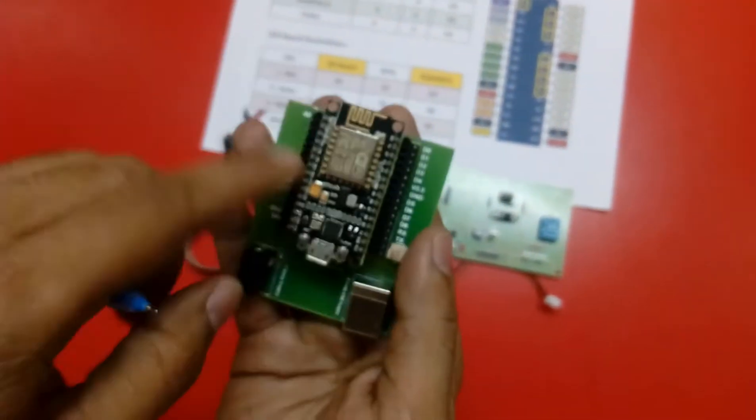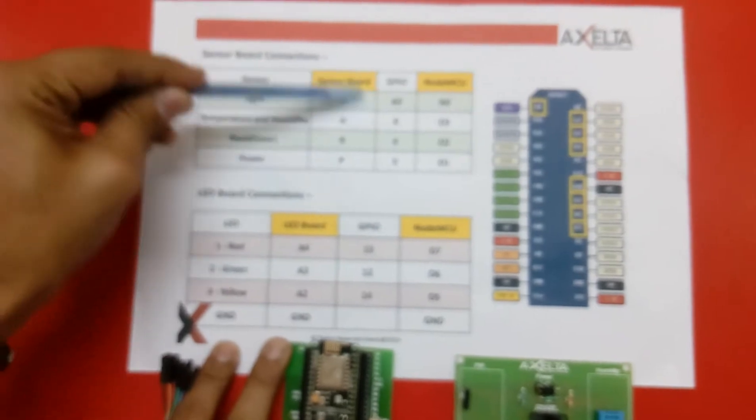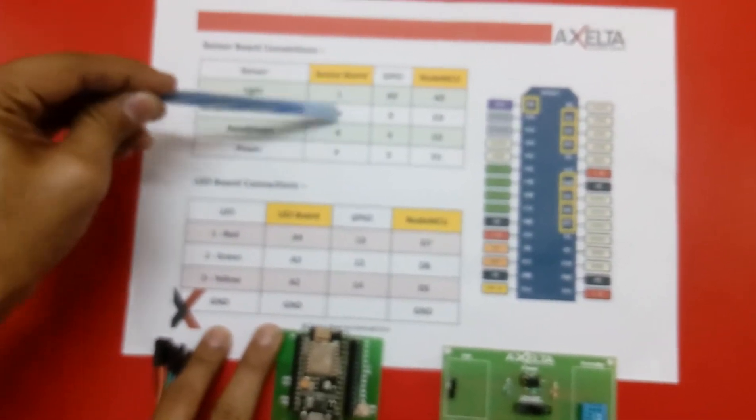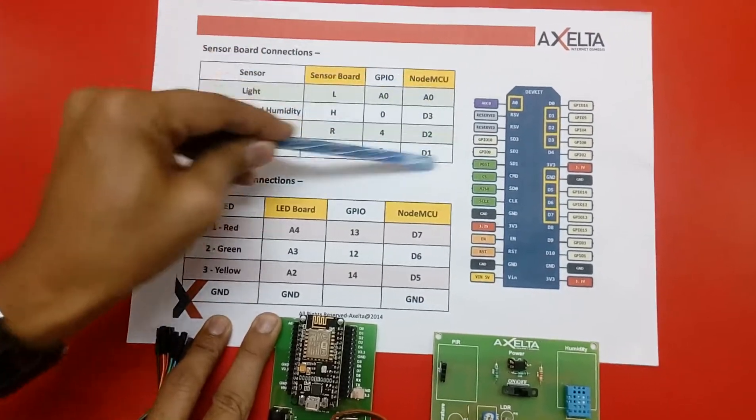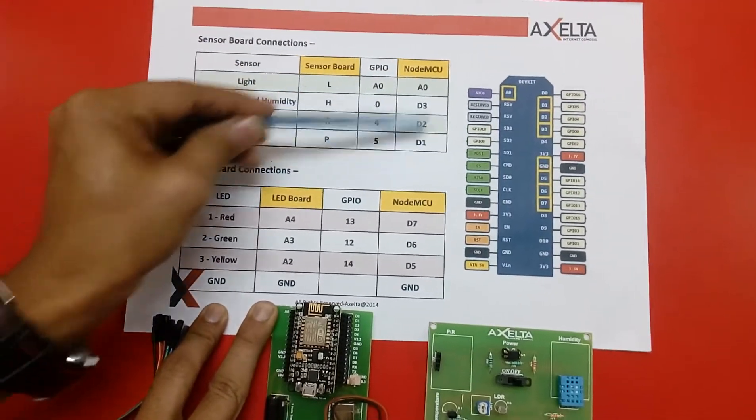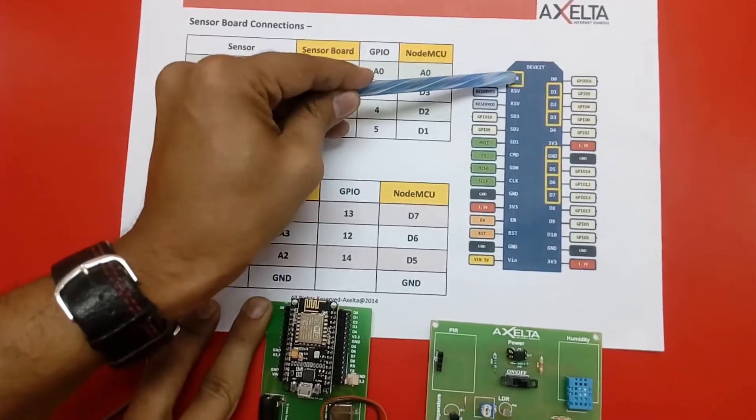To make connection with this NodeMCU board you have to refer to this sensor board connection table. As per table, these are the connections: notations written on sensor board L, H, R and P correspond to the pins of the NodeMCU board A0, D3, D2 and D1. So D0, D1, D2, D3 is over here and A0 is over here.